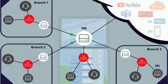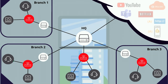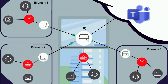For example, I could have several endpoints deployed in several branch offices, my headquarters, and my infrastructure as a service public cloud. I could simulate bi-directional calls between my branch offices and my headquarters office, and then also take it a step further to verify my user experience to Microsoft Teams.